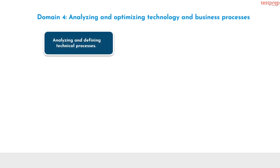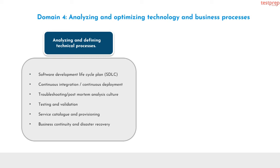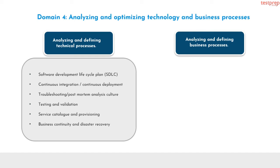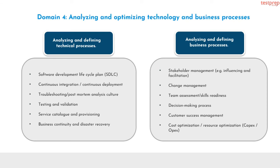Domain 4: analyzing and optimizing technology and business processes. Number 1, analyzing and defining technical processes. It contains: first, software development lifecycle plan; second, continuous integration or continuous deployment; third, troubleshooting or post-mortem analysis culture; fourth, testing and validation; fifth, service catalog and provisioning; sixth, business continuity and disaster recovery. Number 2, analyzing and defining business processes. It contains: first, stakeholder management — influencing and facilitation; second, change management; third, team assessment or skills readiness; fourth, decision making process; fifth, customer success management; sixth, cost optimization or resource optimization — CAPEX or OPEX. Number 3, developing procedures to ensure the resilience of solution in production, for example chaos engineering.